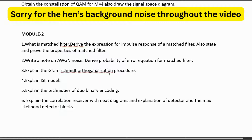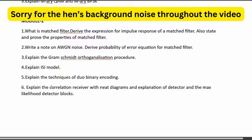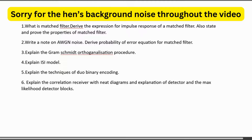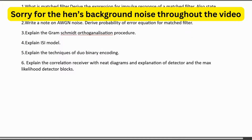The Gram-Schmidt orthogonalization procedure explanation is very important. Also explain the ISI model, then techniques for duobinary encoding — there are four techniques, so study all four. Explain the correlation receiver with neat diagrams.